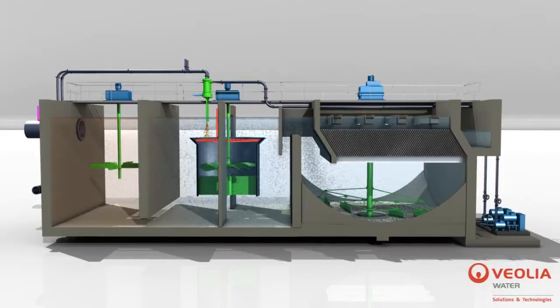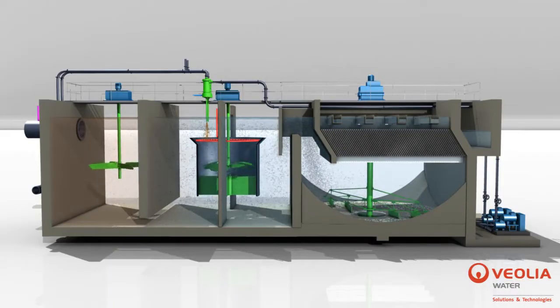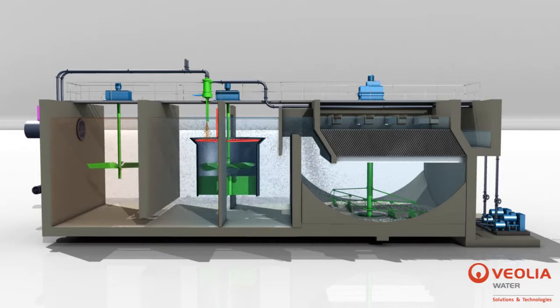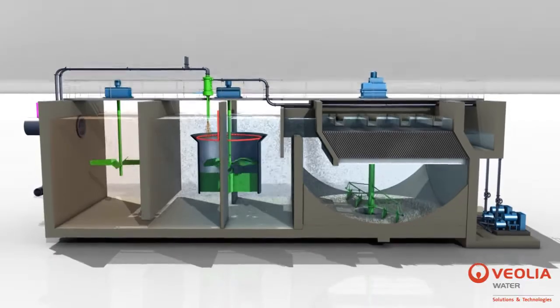In addition to ballasting the flocks, the microsand buffers the effect of sudden raw water flow or load variations, making ActiFlow Turbo a very stable process. This short overall hydraulic retention time on the order of a few minutes makes it easy to quickly optimize the treatment.